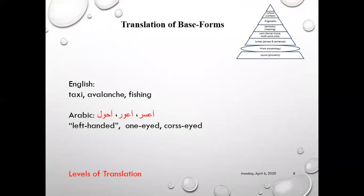Now we'll come to the base form. How to translate the base form? Sometimes we have got words which may not be found in the target language in a similar form. Sometimes one form can be transferred into two forms. 'Taxi,' for example, in English can be translated into 'sayyara ujra' in Arabic — one into two. 'Avalanche' — 'inhiyar jalidi,' one into two. 'Fishing' — 'sayd al-asmak,' one into two, because we have 'hunting' which is 'sayd barri.'